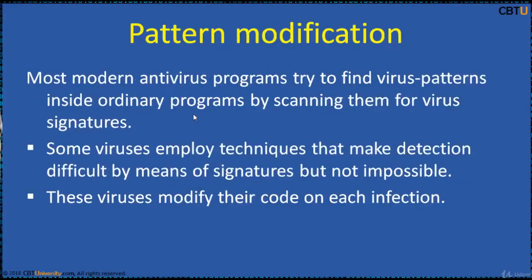Most modern anti-virus software programs try to find virus patterns inside ordinary programs by scanning them for virus signatures. A virus signature is a sequence of bytes that an anti-virus program looks for because it is known to be part of a virus. Different anti-virus programs will employ different search methods in identifying a virus.